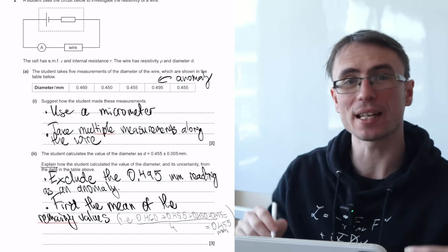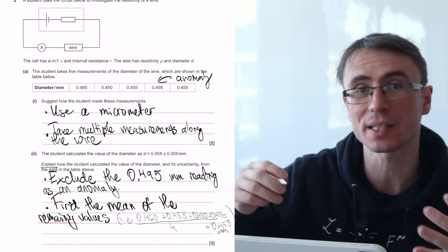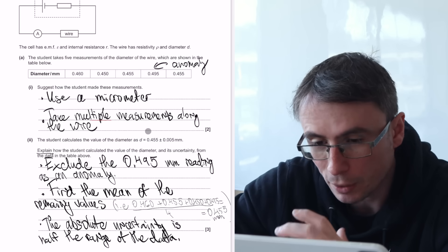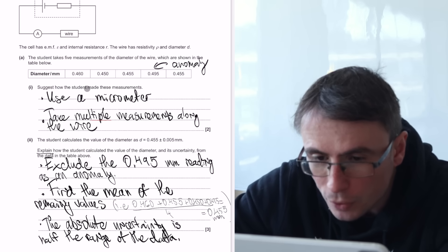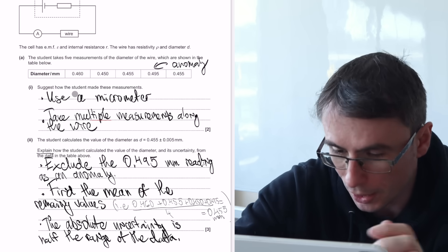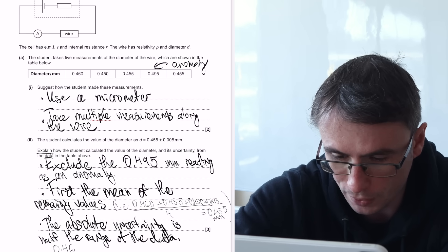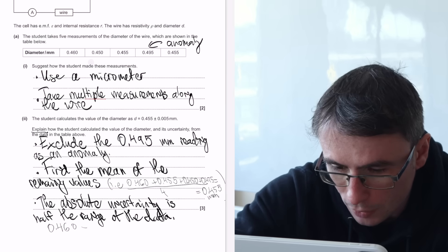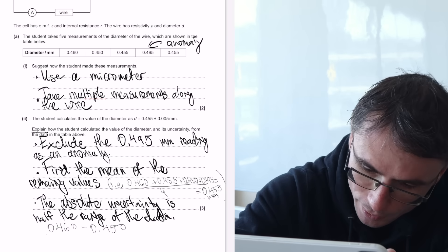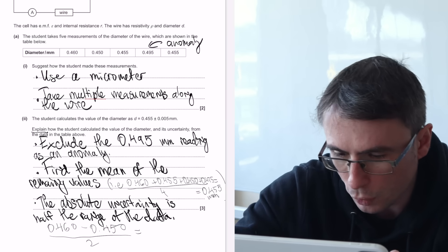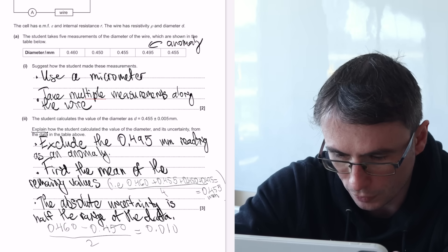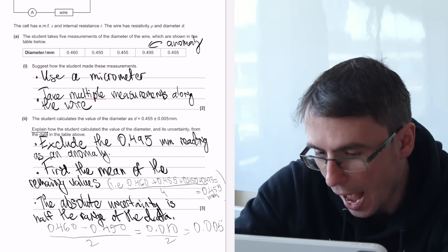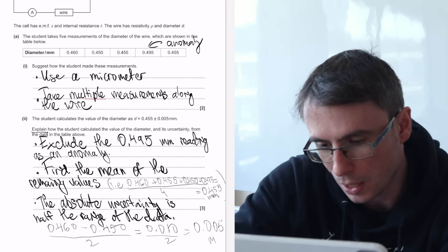To calculate the absolute uncertainty, anytime we're given a data set, we can use the rule that absolute uncertainty is half of the range. Just to illustrate this, the range is going to be the highest reading, which after the exclusion of the anomaly is just going to be 0.460, take away the smallest reading, which is going to be 0.450. And then we're going to be dividing this by two, which is 0.010 over two, which is 0.005 as our absolute uncertainty in millimeters.